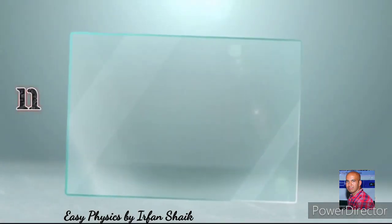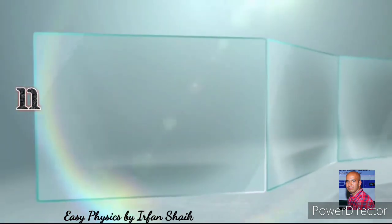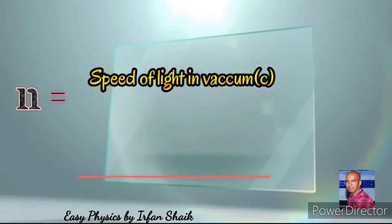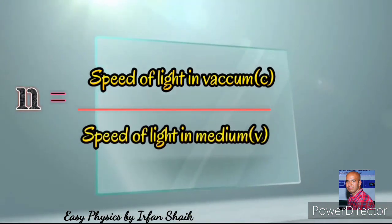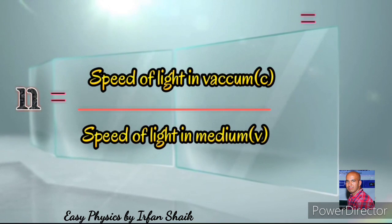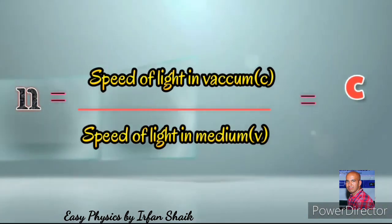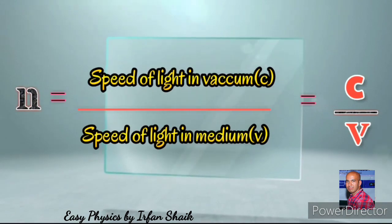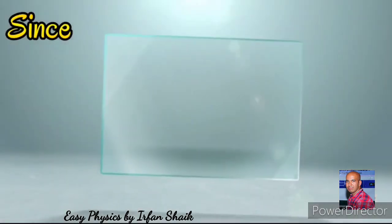So n equals speed of light in vacuum divided by speed of light in medium. This can be formulated as c by v. We know that the speed of light in vacuum c, that is 3 into 10 to the power of 8, is always greater than the speed of light in any medium.